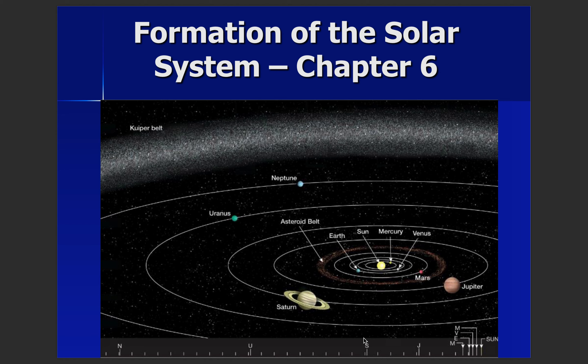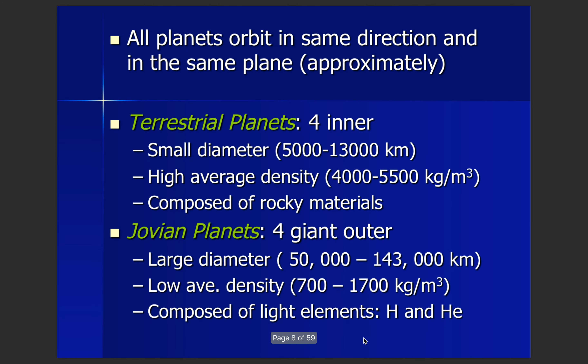In this image you have an inaccurately scaled formation of our solar system, just to give you an idea. This chapter really gets you thinking about why the planets in the outer solar system have different features than the planets on the inner part. So let's look at our planets. All planets orbit in the same direction and in the same plane, pretty much.